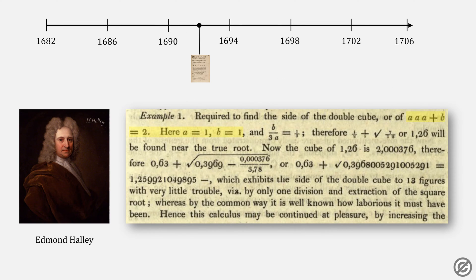Halley gives an example of finding the square root of 2 by letting a be 1 and b be 1. After the first iteration we get 1.26, and then after repeating it you get a much more accurate answer, up to 13 digits with very little trouble — whereas by the common way, it is well known how laborious it must have been.